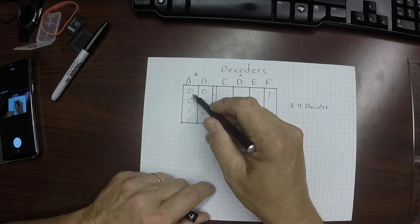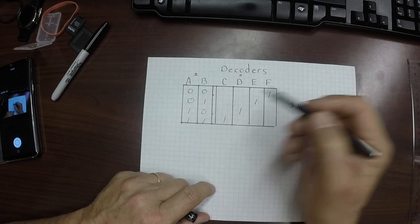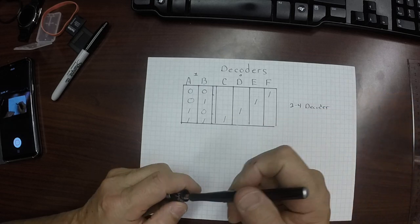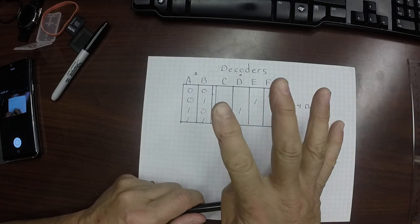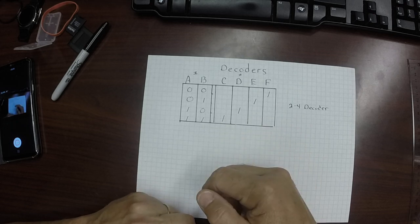So I have two inputs: 0,0, 0,1, 1,0, and 1,1. And as you'll recall, with the two binary digits, we can represent four things: 0, 1, 2, and 3.